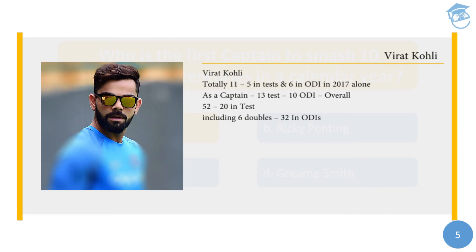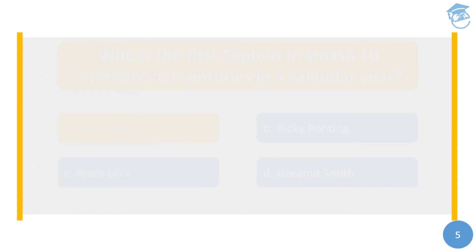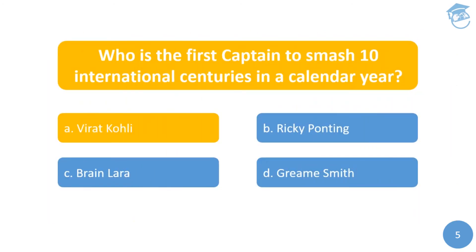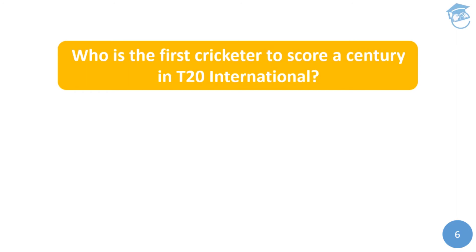The answer is once again Virat Kohli — the most adorable cricketer of our time. Kohli scored 11 centuries in the year 2017 alone as a captain: five in test matches and six in ODIs. Overall he has scored 52 centuries, with 20 in tests including six double centuries, and 32 in ODIs. As a captain he has scored 13 test centuries and 10 ODI centuries. We wish him all the best and hope he achieves even greater feats in years to come.